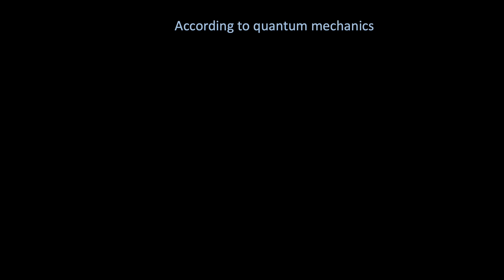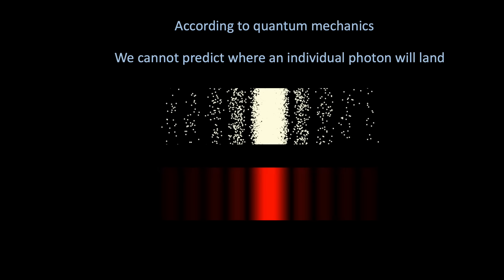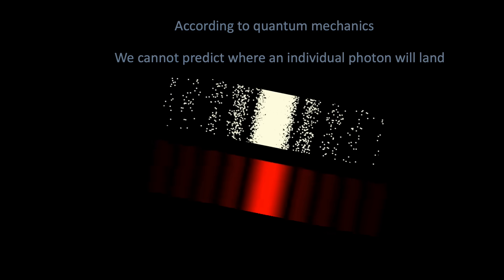Now according to quantum mechanics, we cannot predict where any individual photon will land on the screen. But after firing enough of them through the slit, a pattern begins to emerge, and this pattern exactly matches the diffraction pattern we observed with the full intensity laser beam. So if you think about it, the diffraction pattern actually represents a probability distribution. It tells us where individual photons are most likely to land. Regions where the intensity is greatest represent regions where we are most likely to detect our individual photon, and less intense regions where we are less likely to detect a photon.